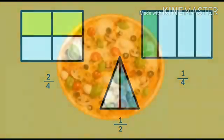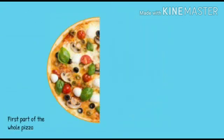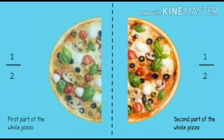For example, look at this pizza. Let's divide it into two equal pieces. This is the first part of the whole pizza, and this is the second part. Both of them are equal in size. Therefore, each of the pieces is 1 by 2 of the pizza.